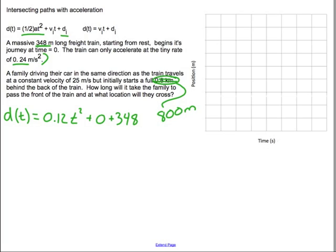Now I will write a function for the car. The car is traveling with a constant velocity so I don't need that acceleration term. It's going to look something like this. The velocity was 25 meters per second times time plus its initial location. It's actually behind the reference though. It is 800 meters behind the reference. I'm going to actually use a minus 800.